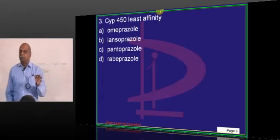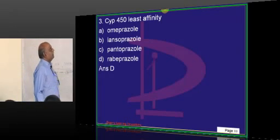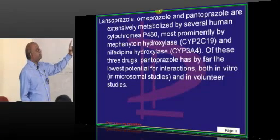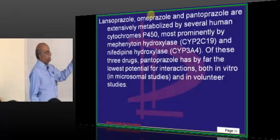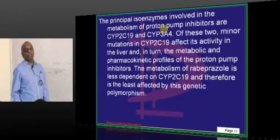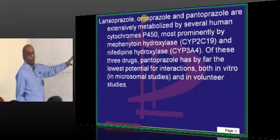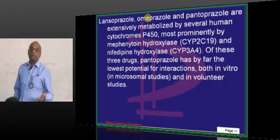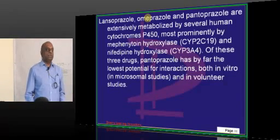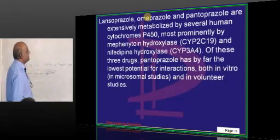Of all proton pump inhibitors, which has got the lowest affinity towards the CYP receptor? The P450 system metabolizes lansoprazole, omeprazole, and pantoprazole - especially CYP2C19 and CYP3A4. Among these three, pantoprazole has the least affinity. But if you also consider rabeprazole, then rabeprazole has the lowest affinity, and the second lowest is pantoprazole. That is how you need to remember it.